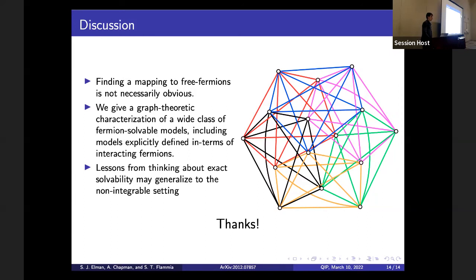Question: How efficient is it to take a given Hamiltonian, build the frustration graph, and check whether it is even-hole claw-free? That can all be done efficiently, assuming the Hamiltonian is sparse — that is, the number of Hamiltonian terms is polynomial in the number of qubits. Constructing the graph itself can be done efficiently, and it turns out that for this particular class of graphs, recognizing them can also be done efficiently.